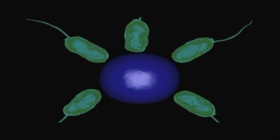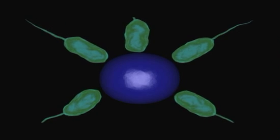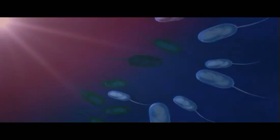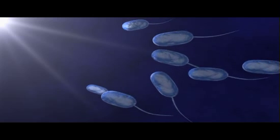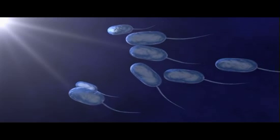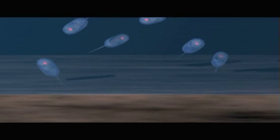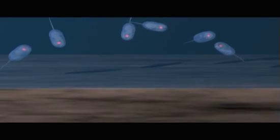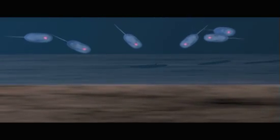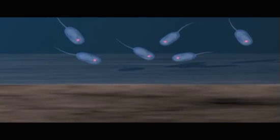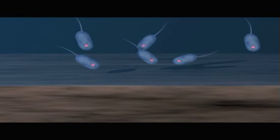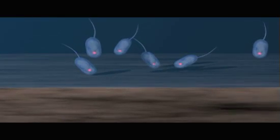In the case of chemotaxis, prokaryotes move toward chemical stimuli such as food and oxygen, and away from stimuli such as chemical toxins. Most mobile photosynthetic prokaryotes exhibit phototaxis, which causes them to move towards light. In some flagellated prokaryotes, magnets formed within the cytoplasm from iron crystals allow them to orient according to the Earth's magnetic field. This allows detection not only of north and south, but also up and down.